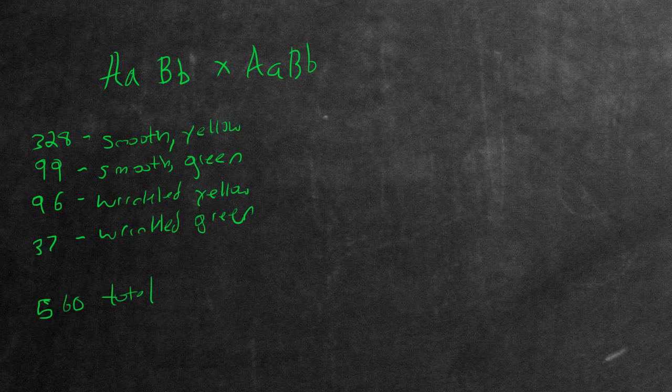This number is going to be used a bit later. Now you're crossing two double heterozygotic individuals. And if you know from experience with these Mendelian genetic problems, whenever you do that, you're always going to get a 9 to 3 to 3 to 1 ratio.